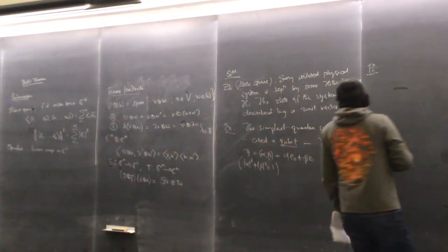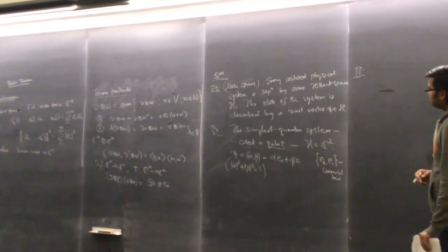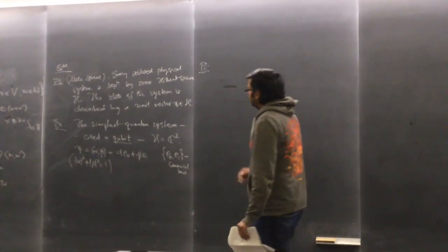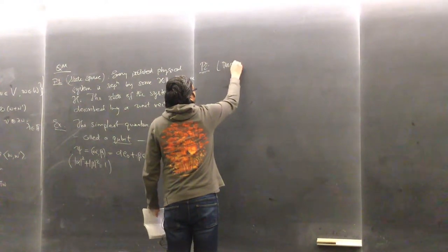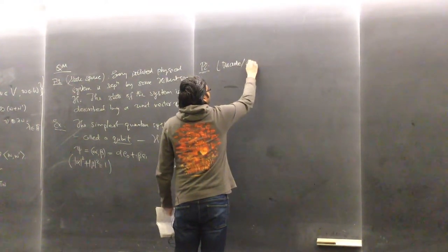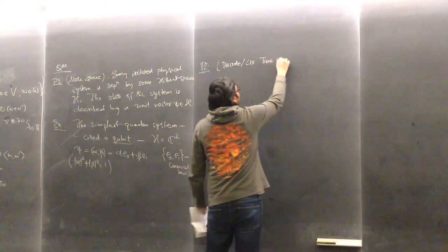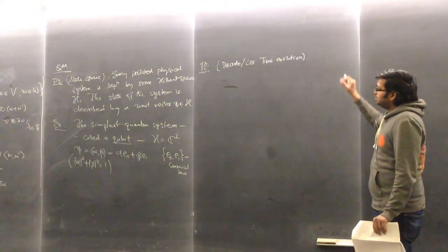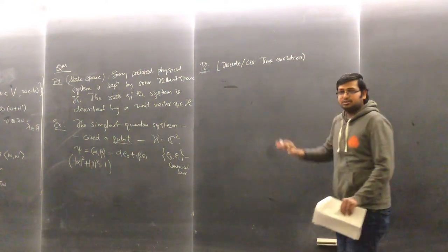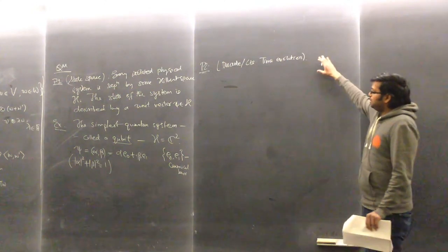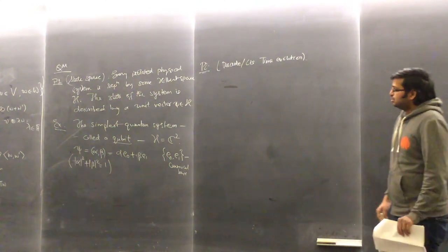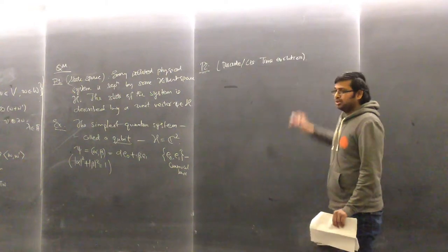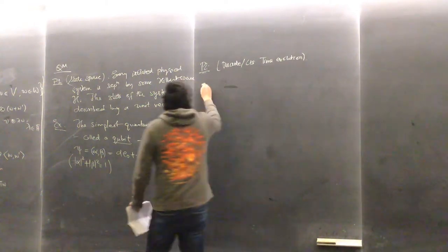A physical system will change with time, and that is governed by the second postulate of discrete or continuous time evolution. We use the Schrödinger equation to dictate how the physical system changes over time. Since I won't be using this postulate in this talk, I will just avoid going into that.